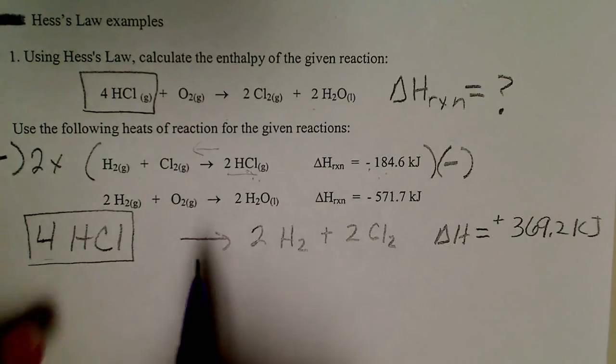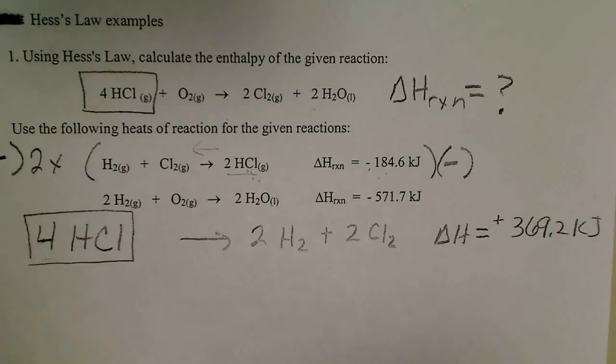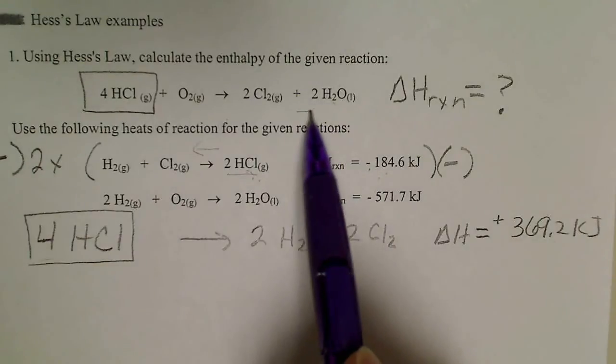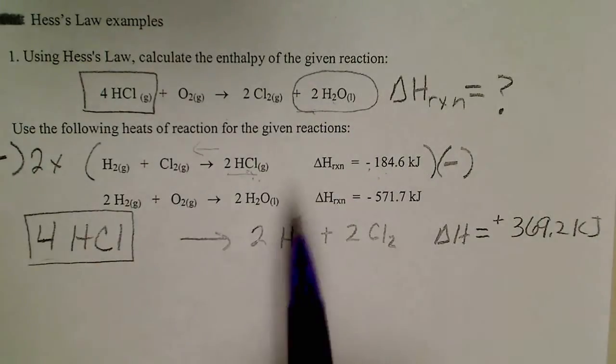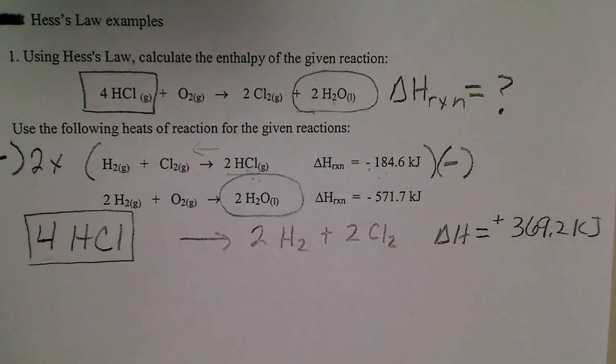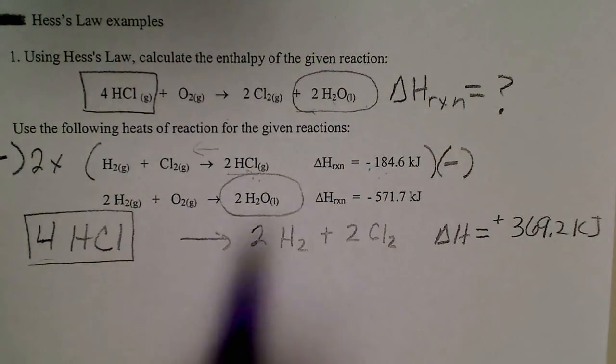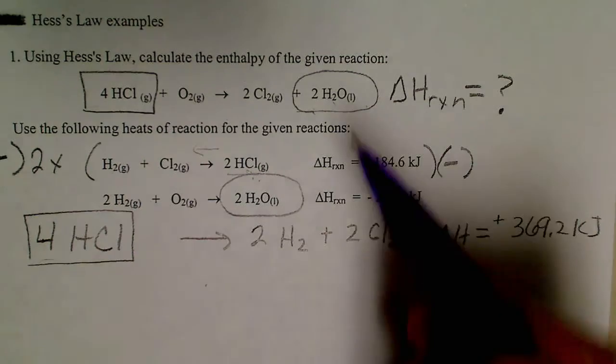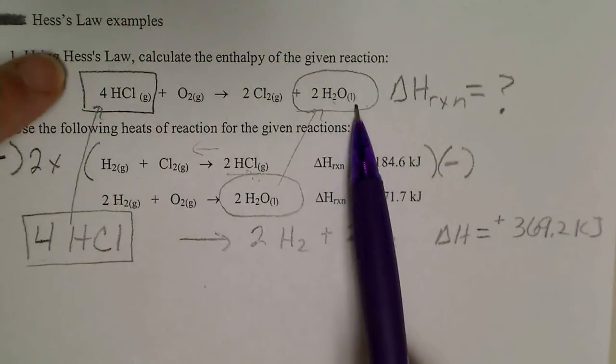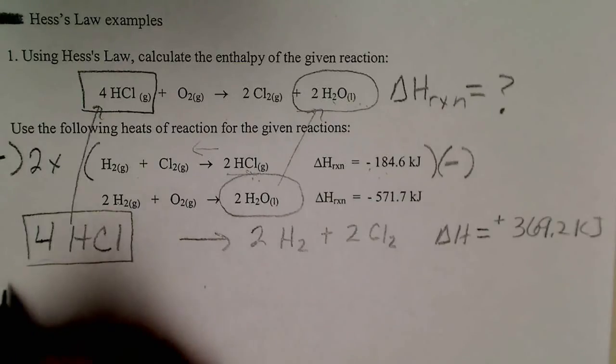And there's a variety of ways to get to the correct answer. Generally, I just look at what is here. For example, now I need two waters on the right. So I'm going to look down here and this equation, I've got two waters on the product side. So I'm just going to rewrite this equation down below. The whole purpose is to make sure that I am obtaining the exact number of moles in the balanced equation that I'm interested in.